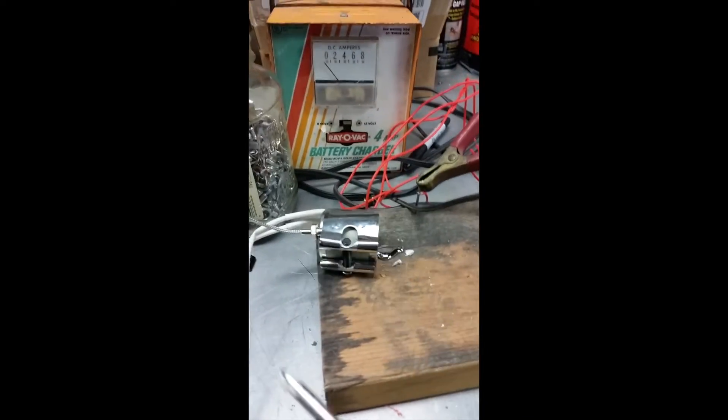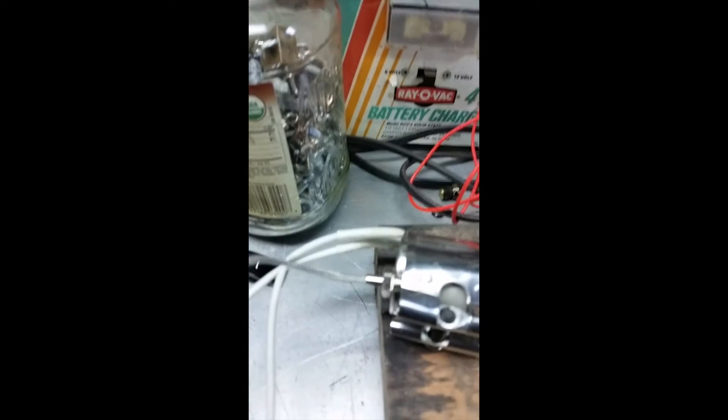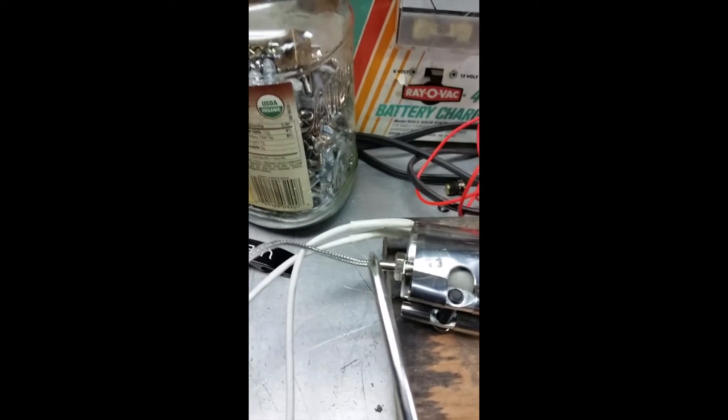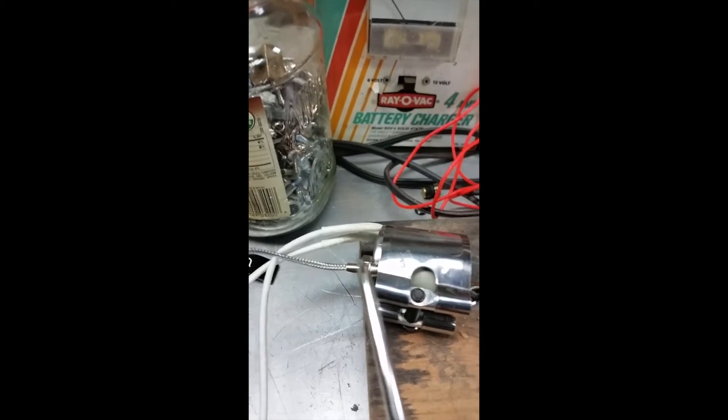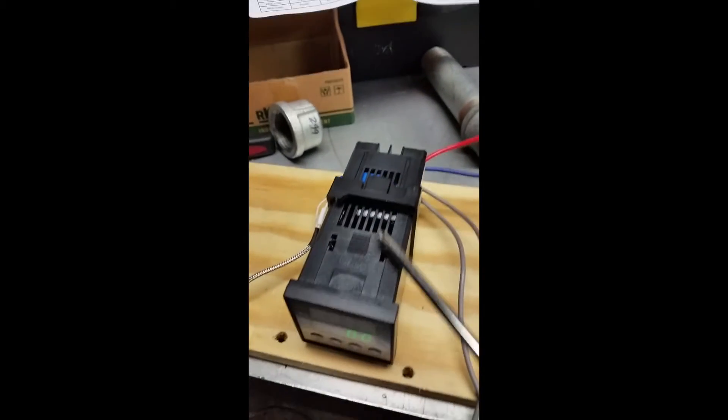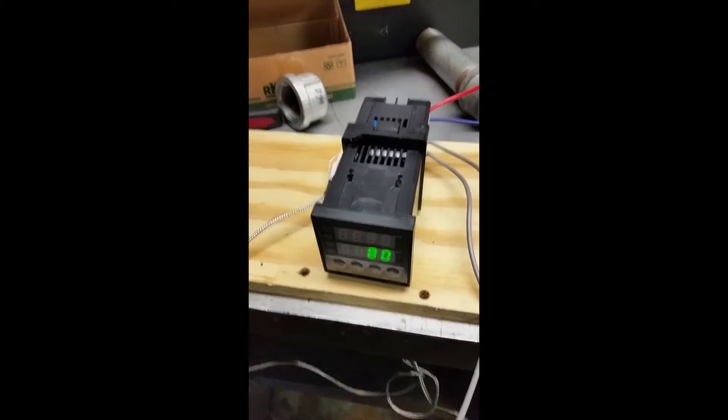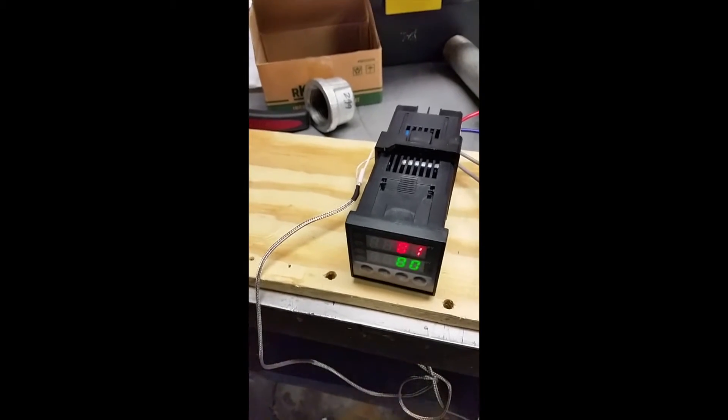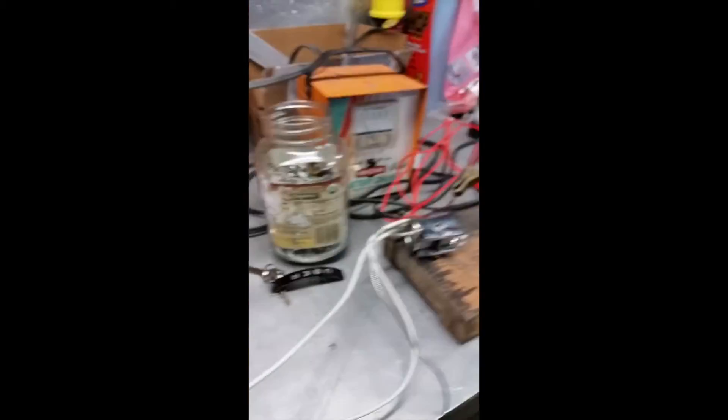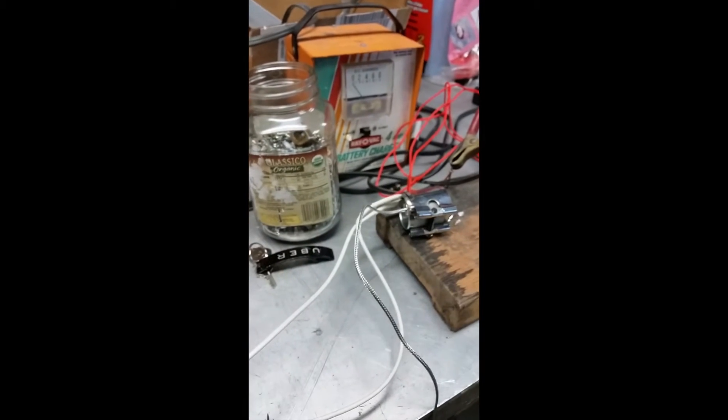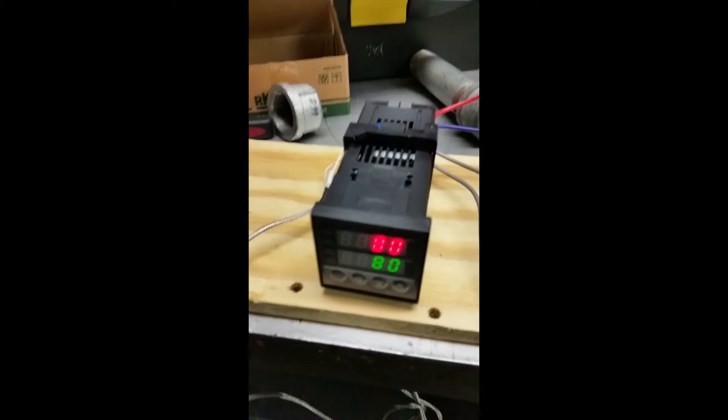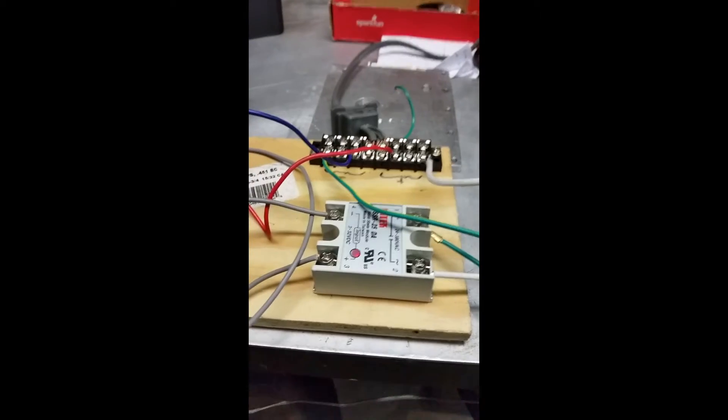And it knows what the current temperature is because there's a thermocouple, which is this little guy here I just kind of screwed in. Really simple. And that connects to the back of this PID controller and reads in the current temperature. And basically this thermocouple outputs a voltage. And then this PID controller reads the voltage and then turns on the relay for a certain amount of time.